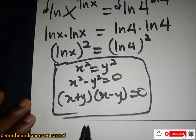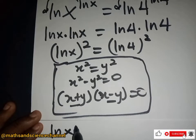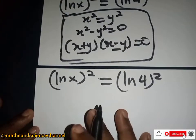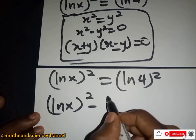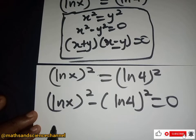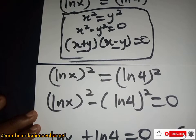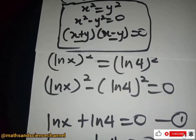Applying this property, we have (ln x)² equal to (ln 4)², which means (ln x)² minus (ln 4)² equals zero. Simplifying using the difference of squares, this gives us: ln x plus ln 4 equals zero as equation one, and ln x minus ln 4 equals zero as equation two.